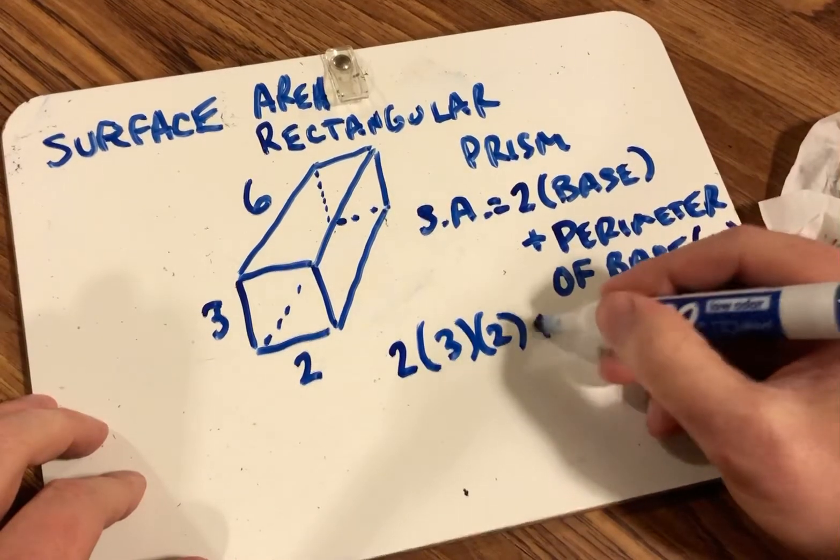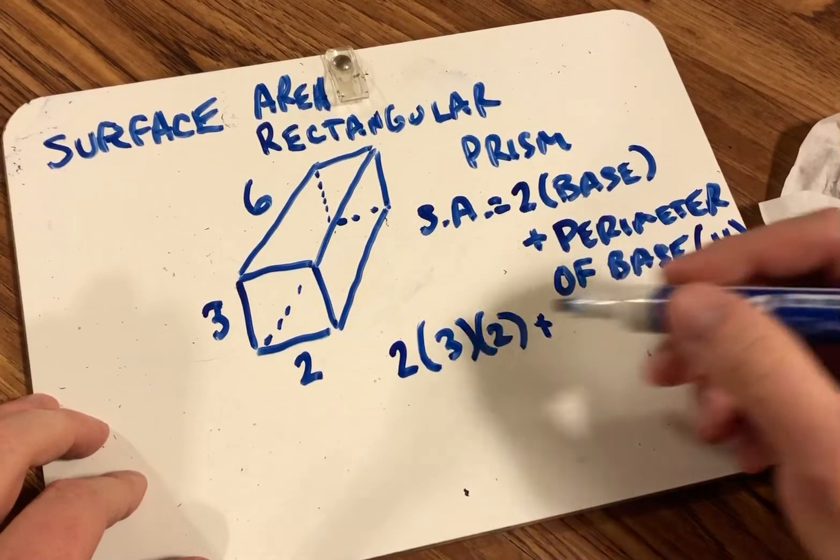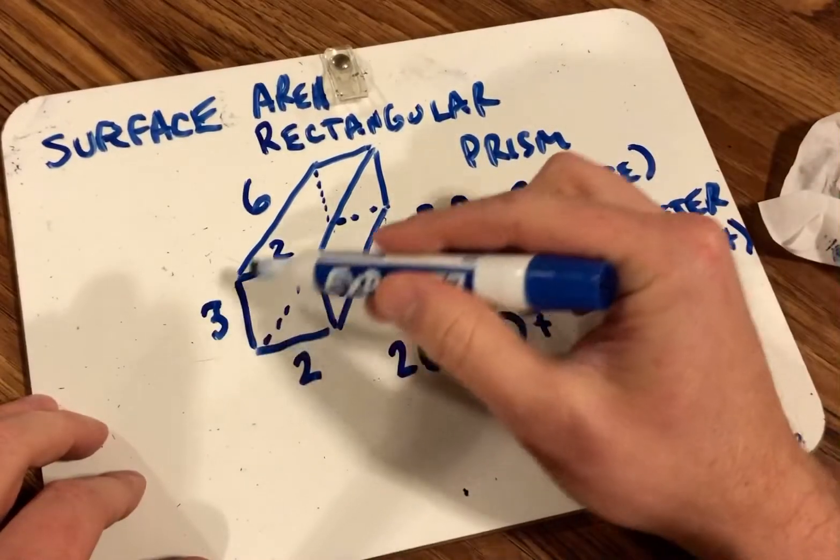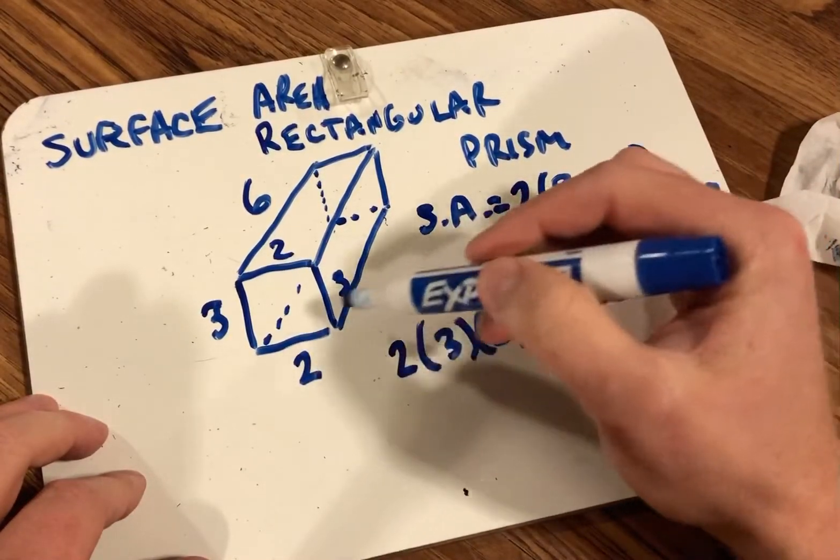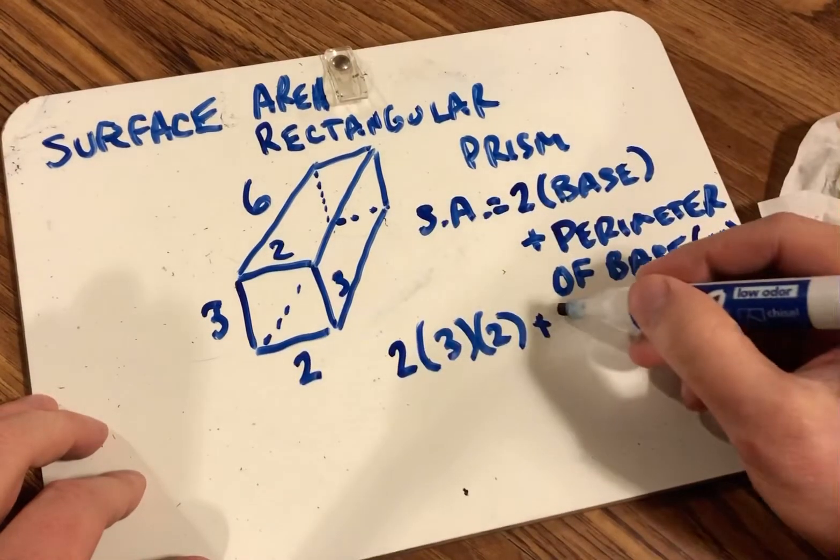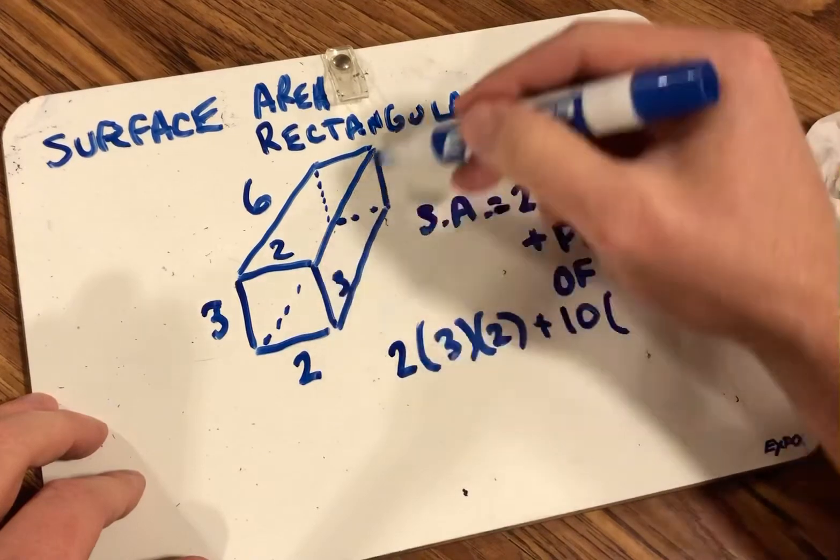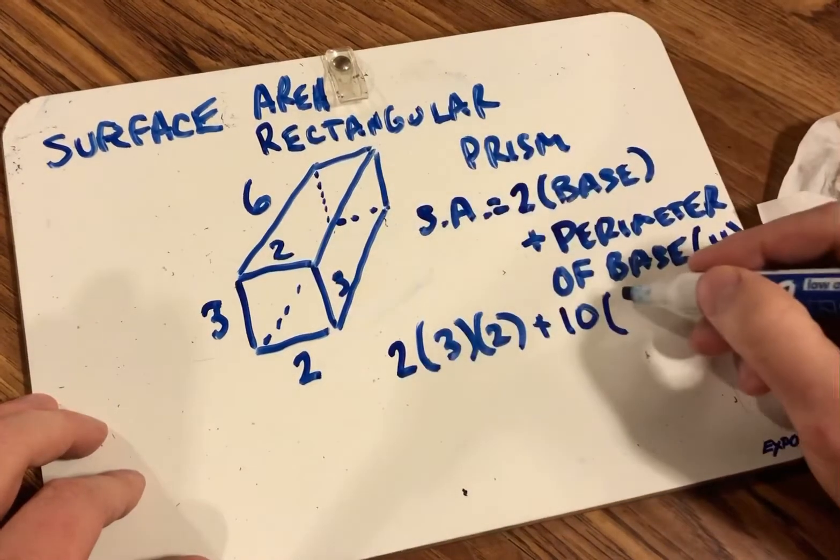I'm then going to find the perimeter. Well, the perimeter of this figure is a rectangle, so three plus two plus three plus two, that gives me ten for my perimeter of my base, and then my height of my prism is this length here, so that would be six.